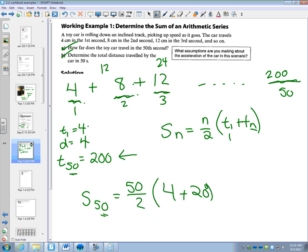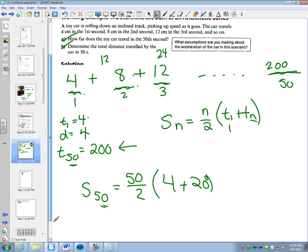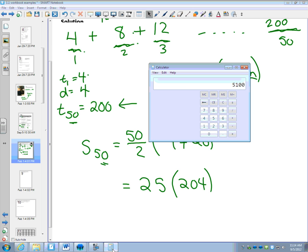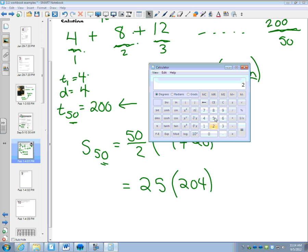Oops, it's got another zero there. So this is equal to 25. I have to do my brackets. 4 plus 200 is 204. So 204 times 25. 25 times 204 equals 5100.